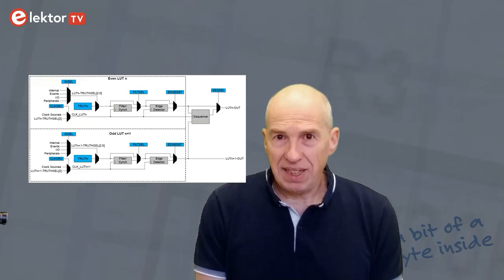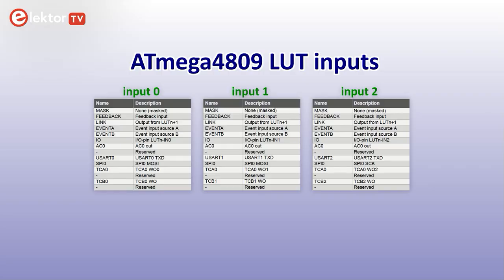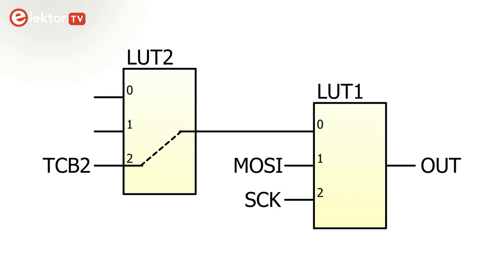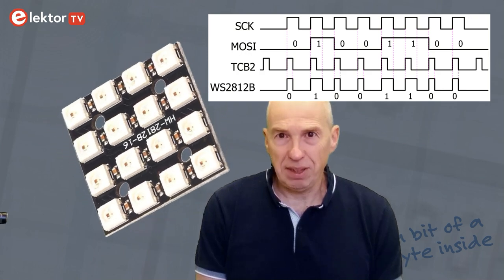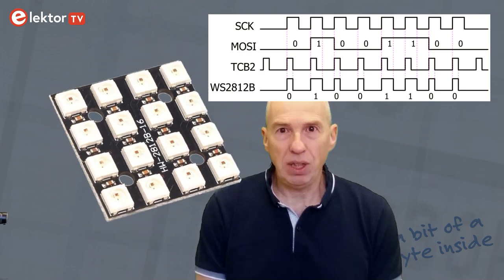The solution I came up with was by adding a second LUT. As the output of a LUT can connect to any input of another LUT, you can use it as a router. The only constraint here is that the two LUTs must be consecutive, and the output must be of the higher numbered LUT. This meant that I had to use LUT2 for this, as its output had to go to LUT1. LUT2 does nothing except passing the TCB2 signal to its output, which is then routed to input 0 of LUT1. Now the WS2812B NeoPixel bitstream generator is in place without interfering with the Arduino API.